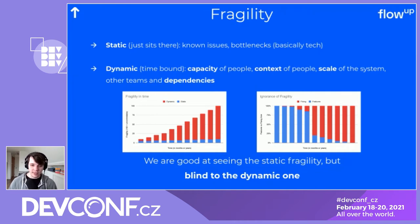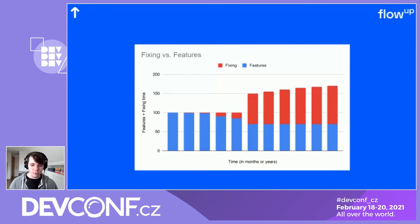Most big system failures happen because we ignore these dynamic fragilities. We weren't prepared for scale, somebody abandoned a library, and now there are bugs nobody remembers. The graph shows features versus fixing — what management calls the bug hunting phase. Sometimes you can recover from this with the right approach, but what's not okay is thinking you can go above your capacity. If you try, you end up doing everything at half or a third the quality, without real quality assurance — just creating legacy code and burning out. Avoid this at all costs.